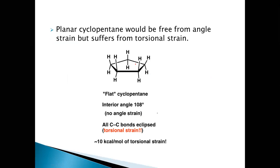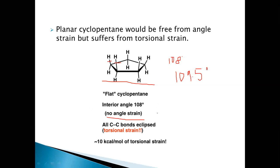So if cyclopentane were to be planar, you can see the structure here — it is free from angle strain because the interior angle is 108 degrees, which is very close to the tetrahedral angle of 109.5 degrees. But when we see this flat cyclopentane, that means it is planar with all five carbon atoms in one plane, the hydrogens are eclipsed — they are present just one behind the another on adjacent carbon atoms — and there is a lot of torsional strain.